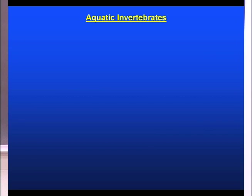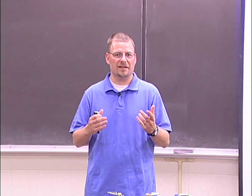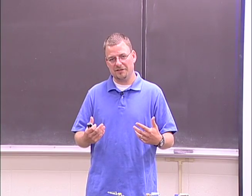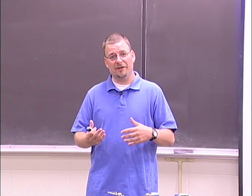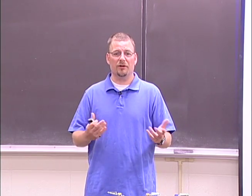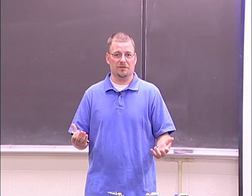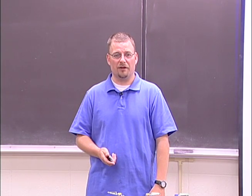Now what we're talking about is sampling aquatic invertebrates. What are aquatic invertebrates? Aquatic invertebrates include all heterotrophic invertebrate protists and animals. Heterotrophic means that unlike plants or algae that can do photosynthesis, heterotrophic organisms need to consume other organisms in order to get their energy. Invertebrate in the sense that they don't have a backbone. We include both protists and animals — two different entire groups of organisms.